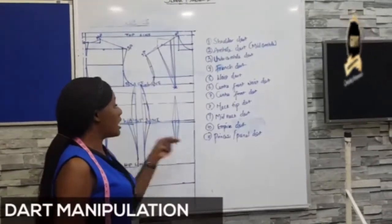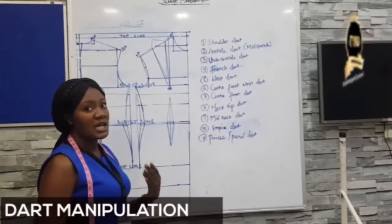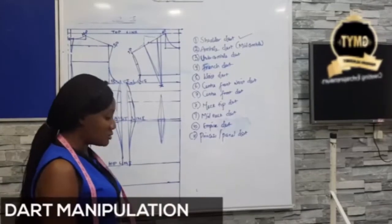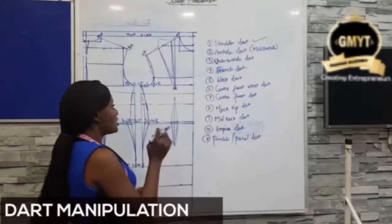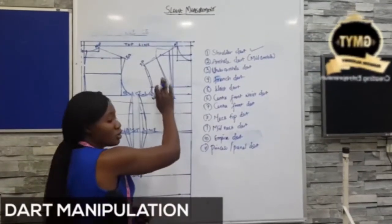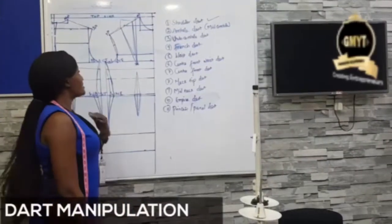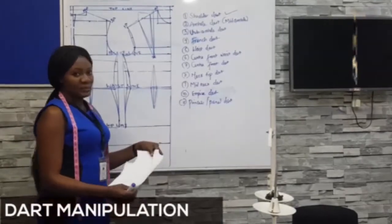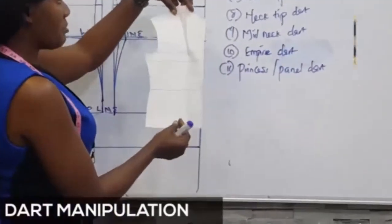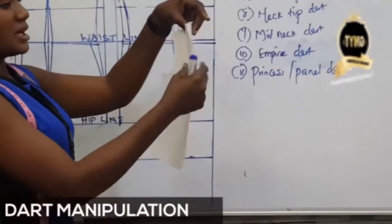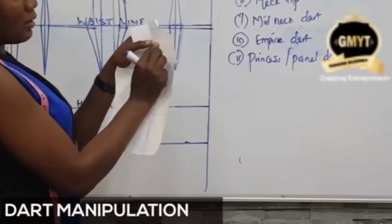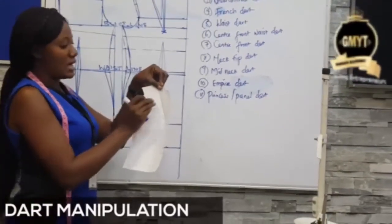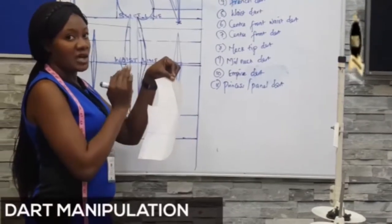Showing you how to move this dart around the body gives different bust shaping, different styles, different cuts, depending on your desired style. So we are done with our shoulder dart. Next is my mid-armhole dart. How do I get my mid-armhole dart? The whole essence is closing this dart and transferring it around the pattern — you close this dart and then you move it somewhere else. To close this dart, I'll be showing you how to close it and transfer it to whatever position you're moving it to. I'll be using this miniature bodice pattern as an example.